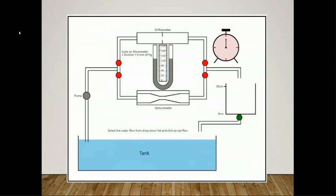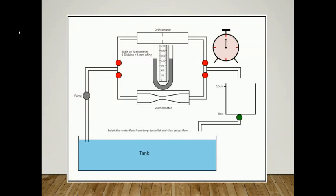The procedure is as follows: click on the drop-down list of water flow to select the water flow. Click 'Set Flow' after selecting the flow. Click on the experiment button — orifice meter or venturi meter — for the experiment you want to perform. Click the 'Start' button and observe the rise in fluid level in the container. Click 'Stop' when the fluid reaches the 50 cc mark. Observe the flow of water and wait for the fluid to reach the tank, then click 'Close Valve' to close the valve below the measuring tank.